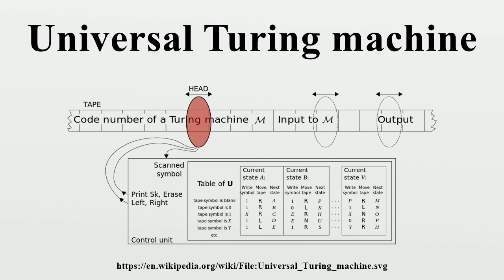For those who would undertake the challenge of designing a UTM exactly as Turing specifies, see the article by Davies in Copeland. Davies corrects the errors in the original and shows what a sample run would look like, claiming to have successfully run a simulation. The following example is taken from Turing. For more about this example see the page Turing machine examples.